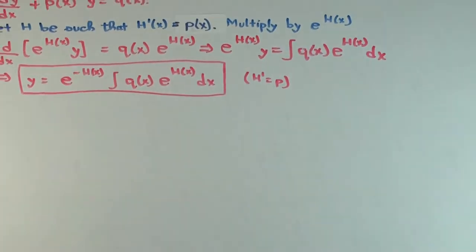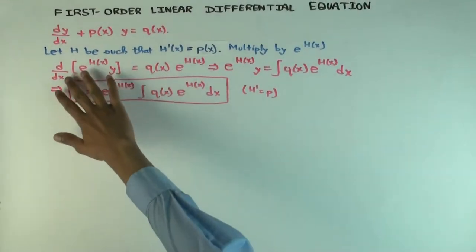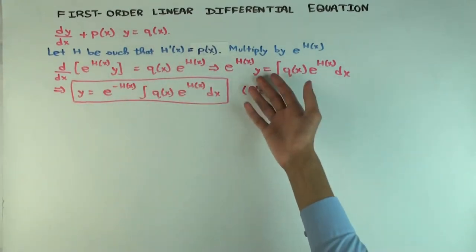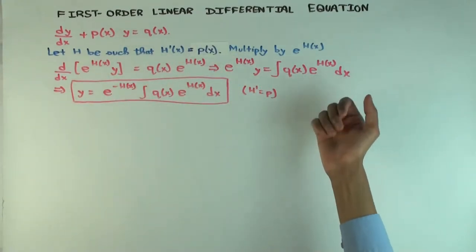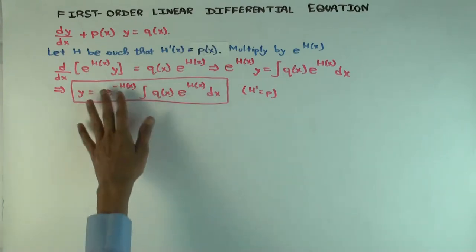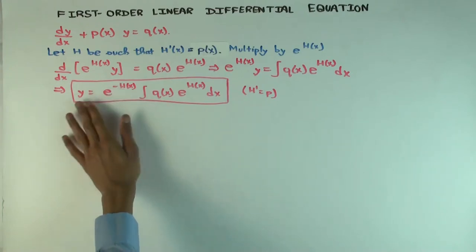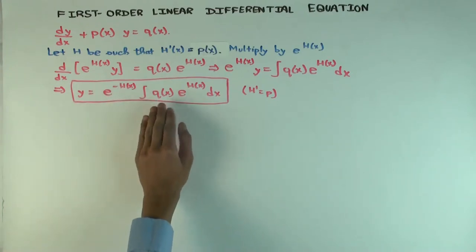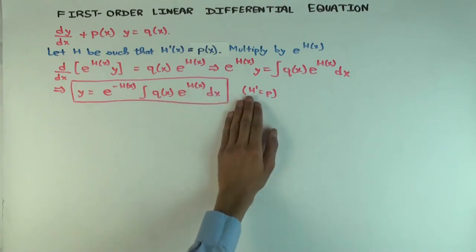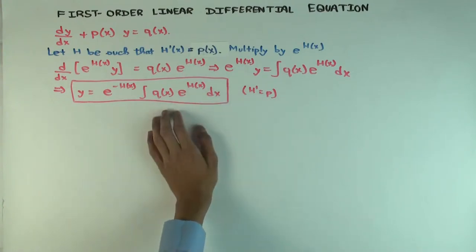The right side becomes q(x)·e^(H(x)). Now you have the derivative of e^(H(x))·y on the left equal to q(x)·e^(H(x)) on the right. Integrating both sides gives e^(H(x))·y equals the integral of q(x)·e^(H(x)) dx. Therefore y equals e^(-H(x)) times that integral, reducing solving the first order linear ODE to two integration problems.